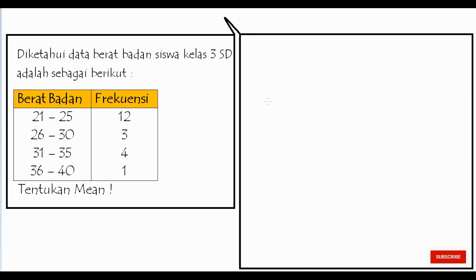Contoh soalnya adalah diketahui data berat badan siswa kelas 3 SD adalah sebagai berikut. Berat badan 21 sampai dengan 25 banyaknya ada 12, 26 sampai dengan 30 banyaknya ada 3, 31 sampai dengan 35 banyaknya ada 4, dan 36 sampai dengan 40 banyaknya ada 1. Pertanyaannya adalah tentukan mean.